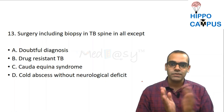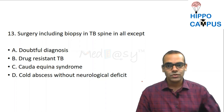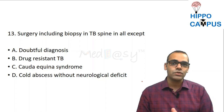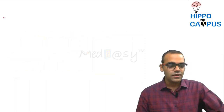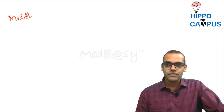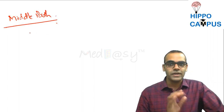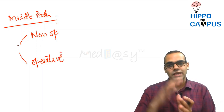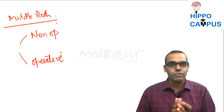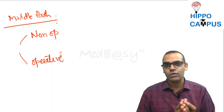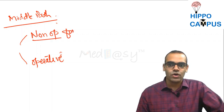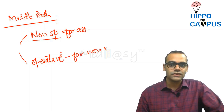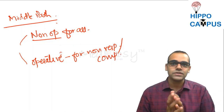Question 13: Surgery including biopsy in TB spine is required in all except which condition? TB spine management follows the middle path regime — not completely non-operative and not completely operative. We start all patients on non-operative therapy (bed rest, ATT, brace, high-protein and high-calorie diet) and assess the response after 3–4 weeks.